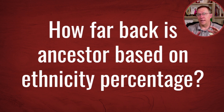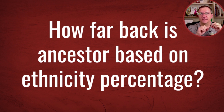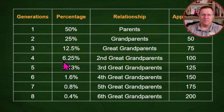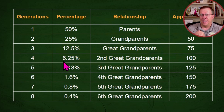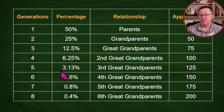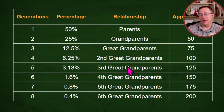In the previous video, I looked at: if you had three percent of some ethnicity and no other indication, how far back could you look to find that possible ancestor? We looked at a chart showing percentages starting from 50, to 25, 12 and a half — basically half each time. Those are just averages, and around three percent would be at about your third great grandparent level.